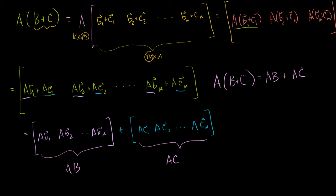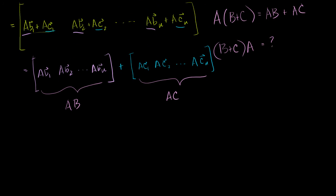So matrix products do exhibit the distributive property, at least in this direction. I say that because matrix products are not commutative. So we don't know necessarily that B plus C times A is equivalent. In fact, most of the time these two things are not equivalent. So let's try to prove it in the other direction — I'll do it a little bit quicker because you know the general argument.